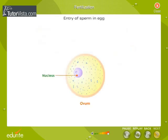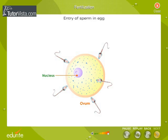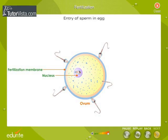Entry of the sperm into the egg. The acrosome of the sperm secretes an enzyme which digests the wall of the egg to make its way inside the egg. As soon as one sperm enters the egg, the entry of the other sperms is prevented by some chemical barrier. At this stage, the tail of the sperm is lost within the cytoplasm of the ovum.